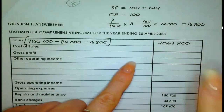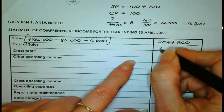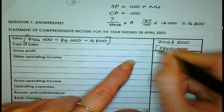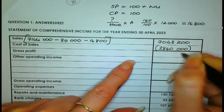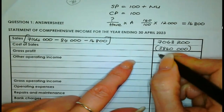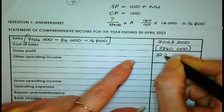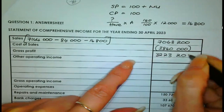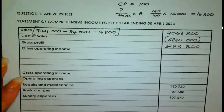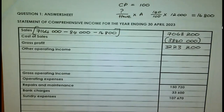Now let's write in the cost of sales amount of R3,840,000. Put it in brackets because we need to deduct it. After deducting that amount, you'll find your gross profit is R3,223,200. Easy marks — that is what we are concerned about today.